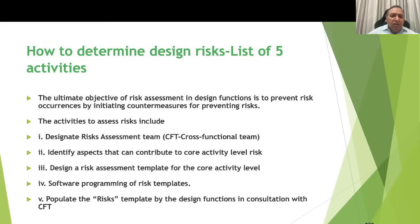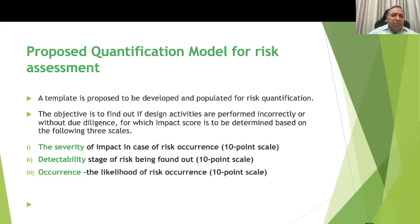At times the cross-functional team also includes the marketing or sales team, who provide risk input related to customers. A quantification model is proposed for measuring risk, because as the important saying goes: what cannot be measured cannot be controlled. The objective is to find out if design activities are performed incorrectly or without diligence, for which an impact score is determined based on three scales: severity score, detectability score, and occurrence score. Severity refers to the impact in case of risk occurrence on a 10-point scale. Detectability means at what stage the design error is found, and occurrence means the likelihood or frequency of risk occurrence.